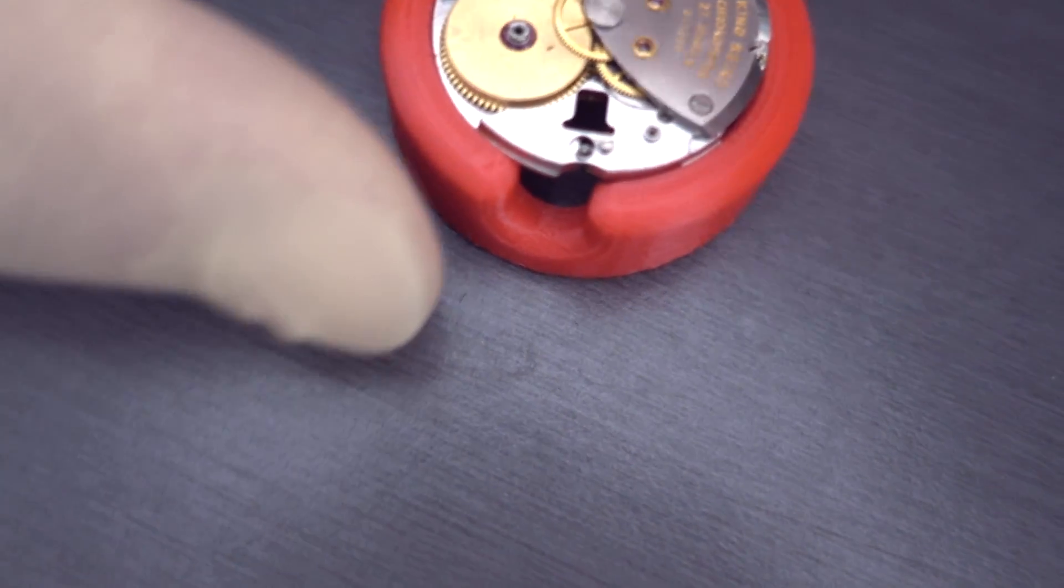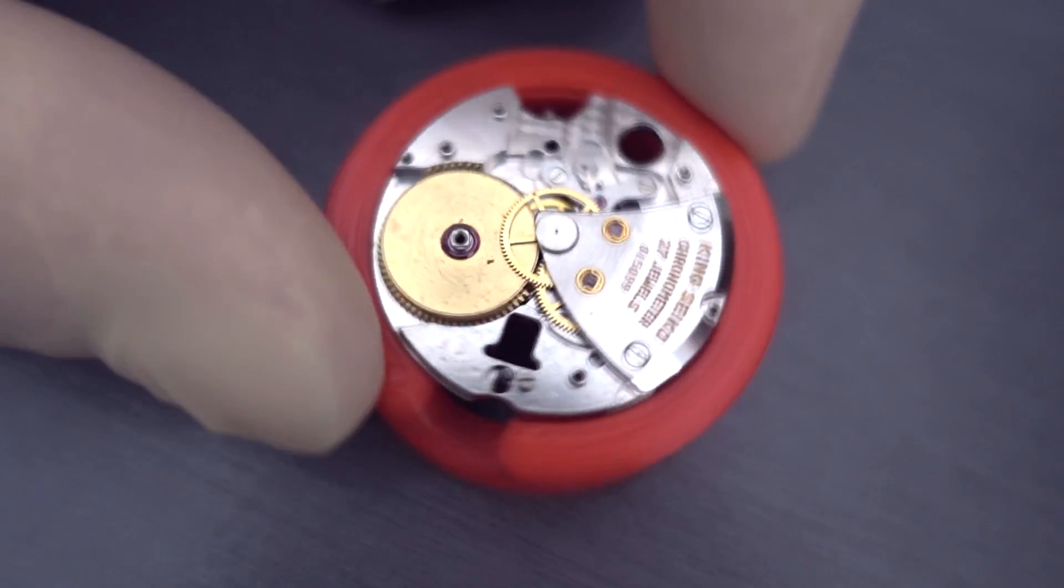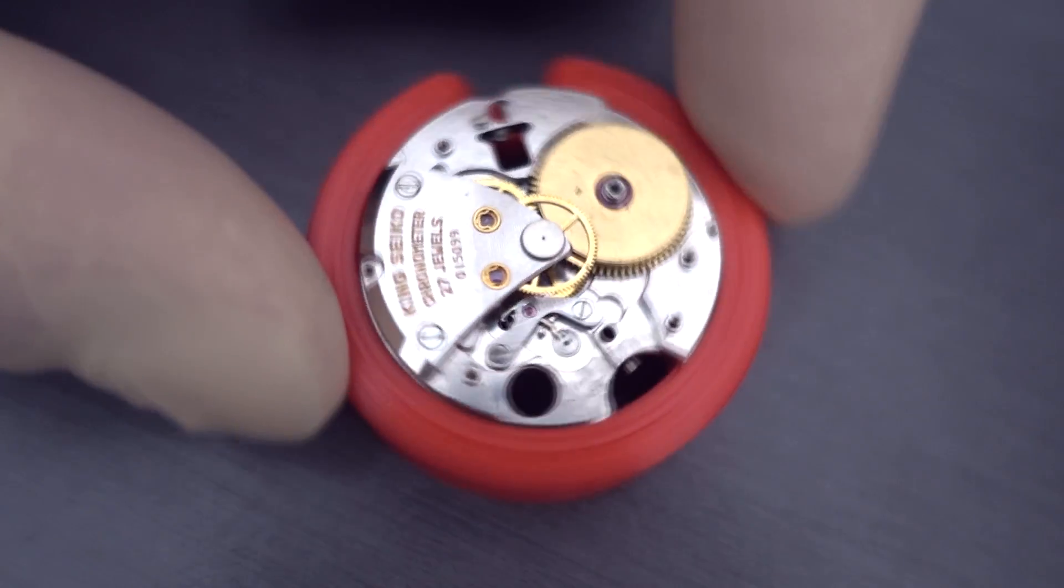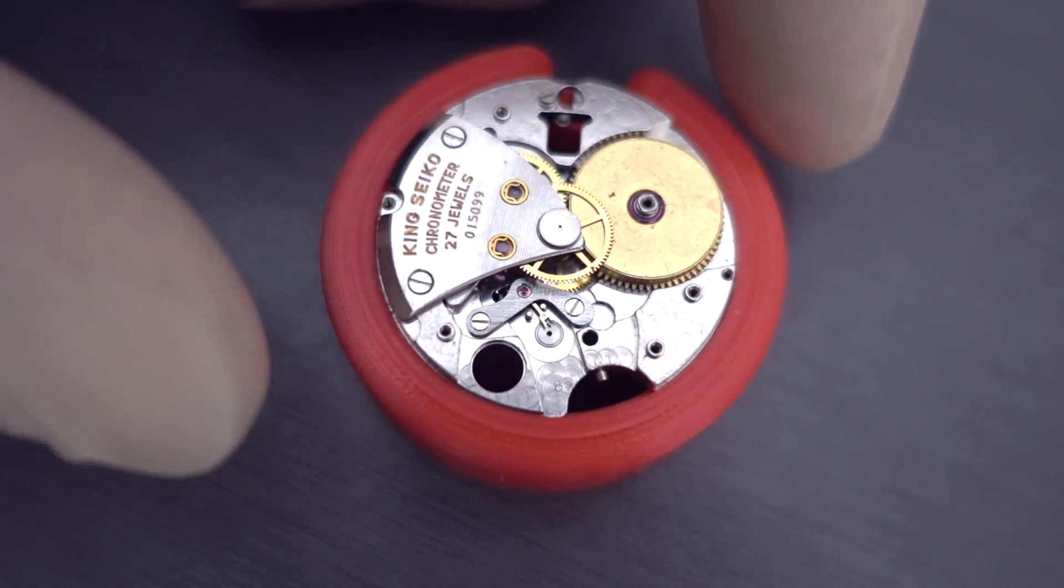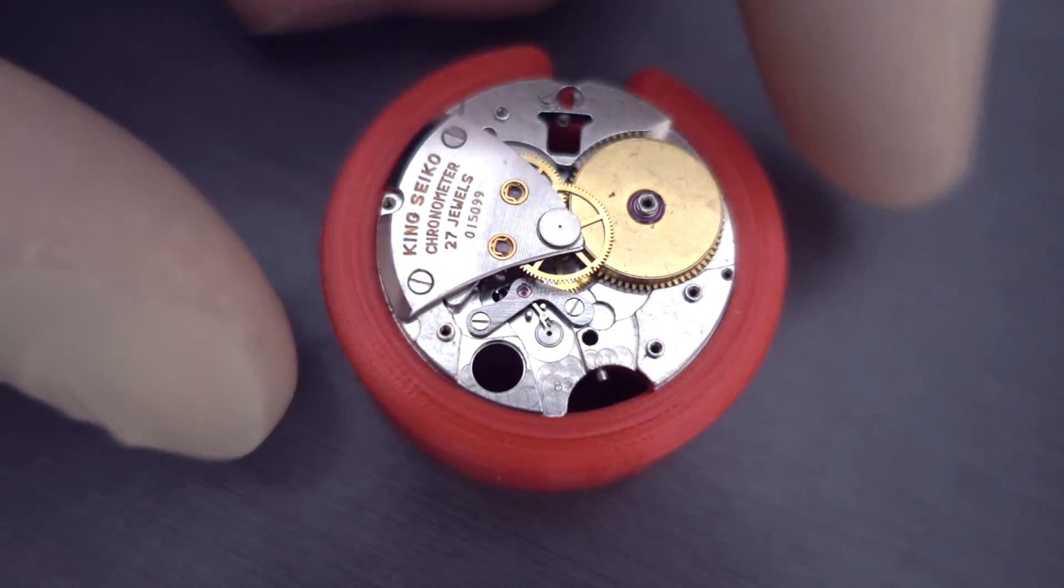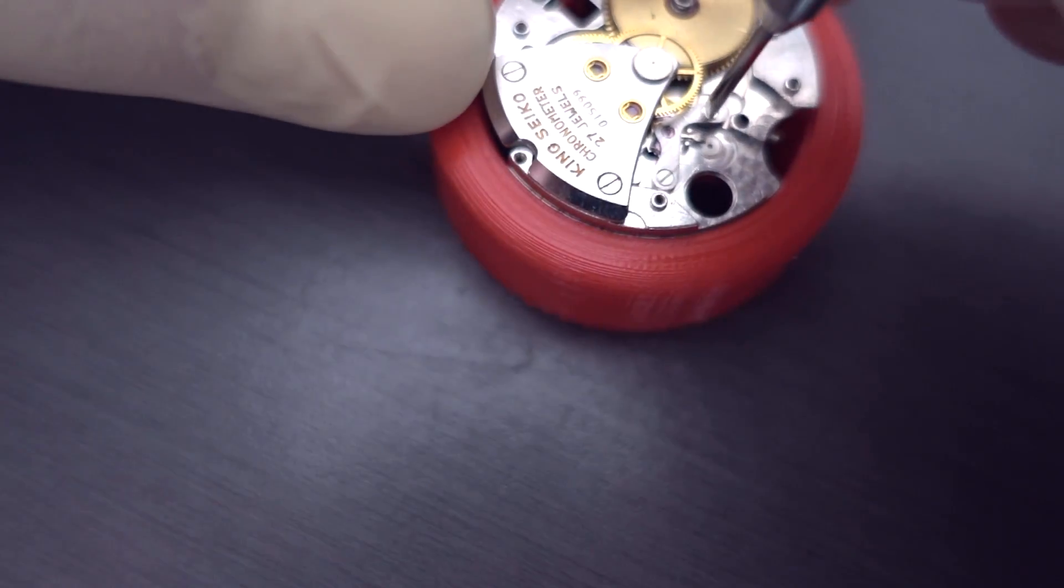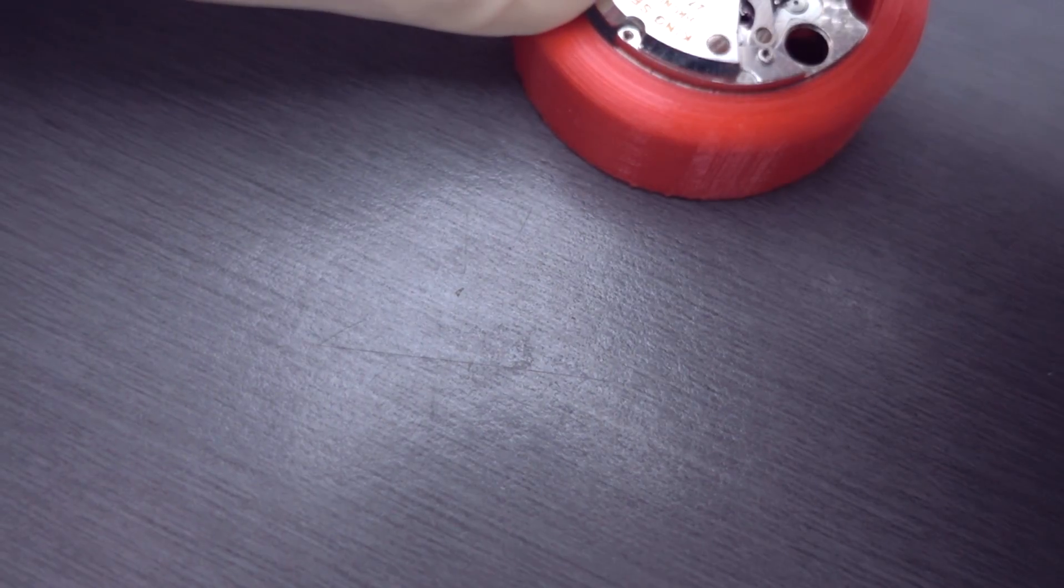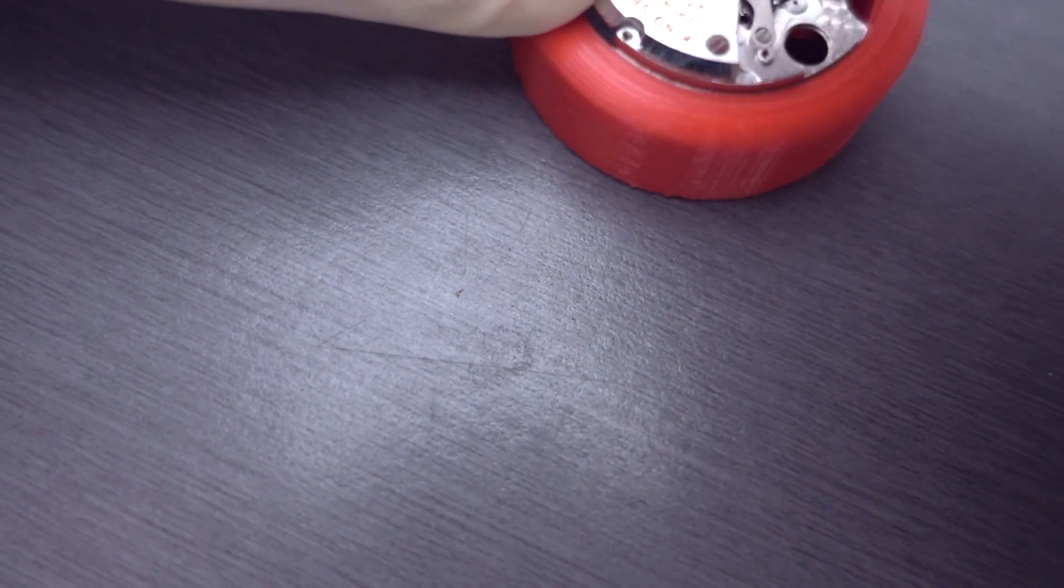And that's the winding pinion there. And you can see the barrel. Now the barrel on these is jeweled on the barrel and also on the barrel arbors. So there's literally four jewels on the barrel and barrel arbors. There's probably overkill but it certainly looks good.